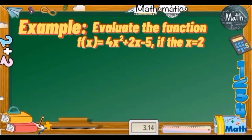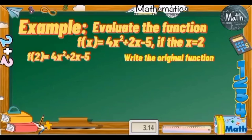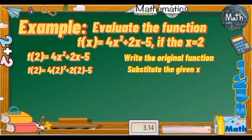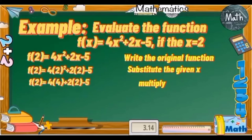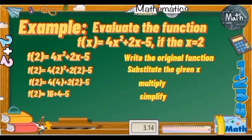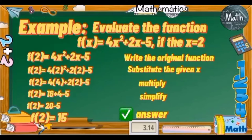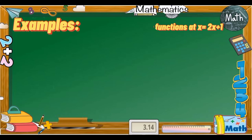For the third example, evaluate the function f(x) = 4x² + 2x − 5 if x = 2. Write the original function, then substitute x with 2: f(2) = 4 × 2² + 2 × 2 − 5. Multiply: 2² = 4, so 4 × 4 = 16; and 2 × 2 = 4. So we have 16 + 4 − 5. Add 16 + 4 = 20, then 20 − 5 = 15. Therefore, f(2) = 15.